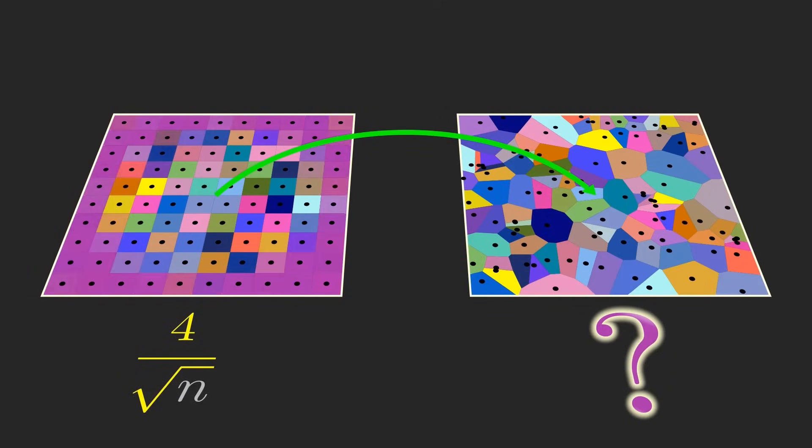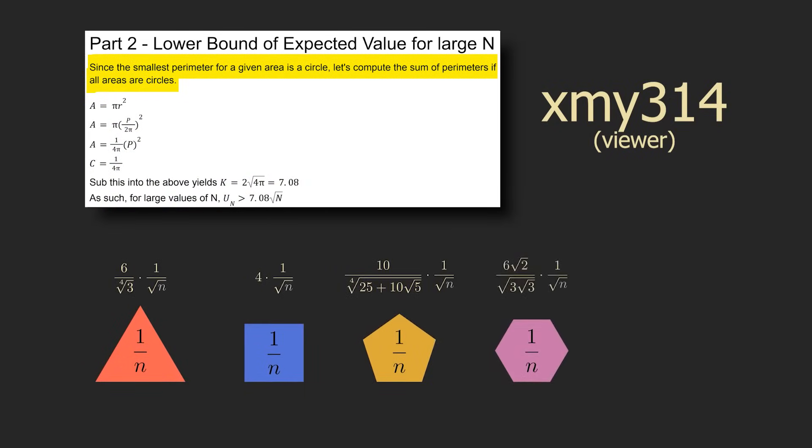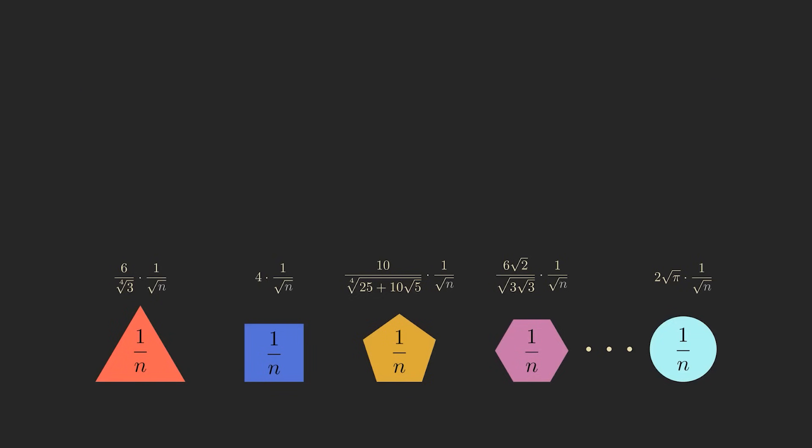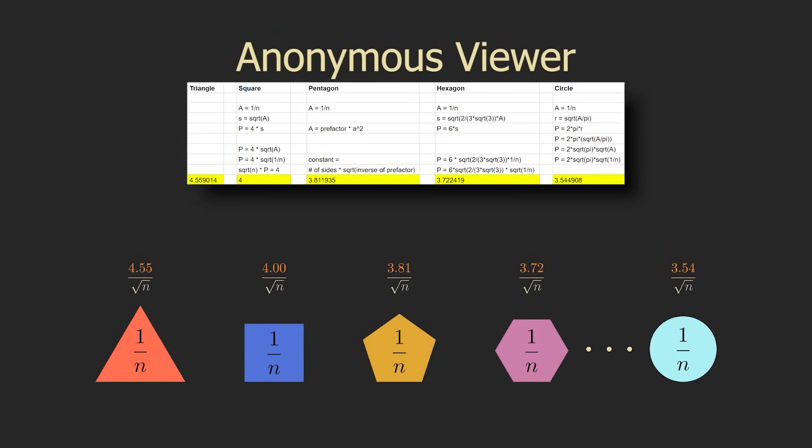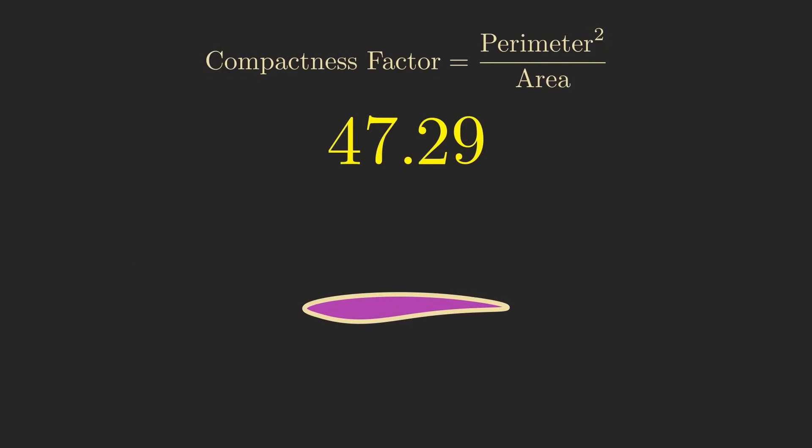Some viewers actually did the approximation with these other shapes to get other formulas that look like something over square root of n. The values in the numerators for these formulas are the square root of a quantity called the compactness factor for a shape. Compactness factor is defined to be a shape's perimeter squared divided by its area.